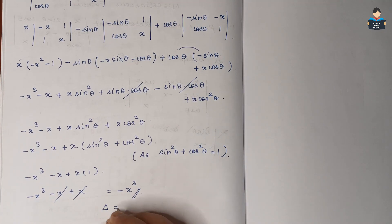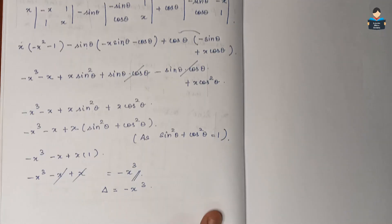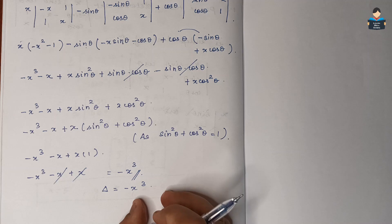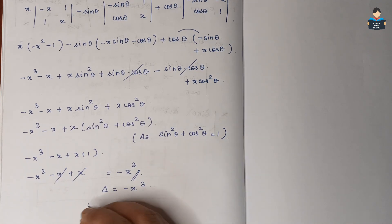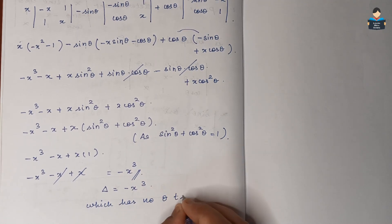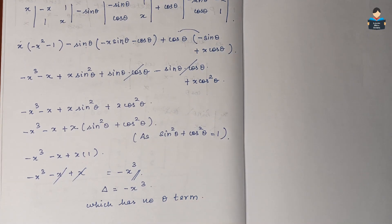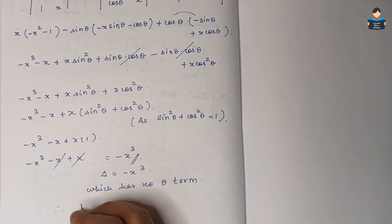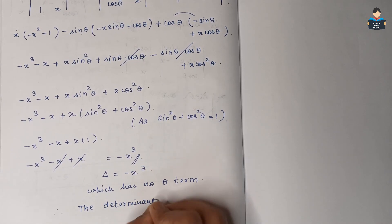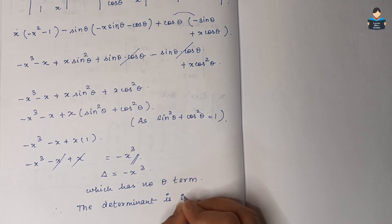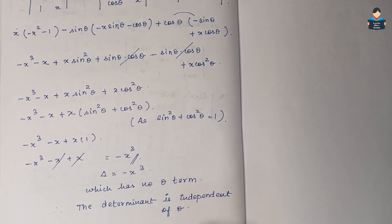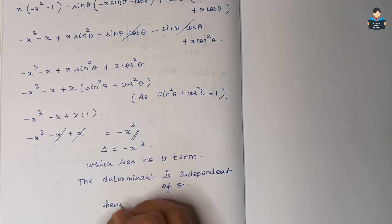Therefore the determinant equals minus x cubed, which has no theta term. Since there is no theta in the result, the determinant is independent of theta, and hence proved.